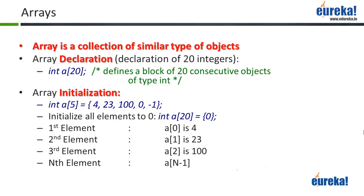If I want to initialize them to particular values, I can initialize each one to a separate value. So when I say int a[5], I have 5 integer objects — the first has value 4, the second 23, the third 100, then 0, then minus 1. But if I want to initialize all of them to 0 and I have 100 objects, I can just say int a[100] = {0}. That's much less tedious.